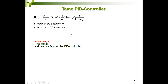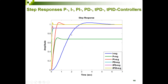Let's compare all these controllers with each other using a plot where a step input is applied to each controller type. The same process is used for all controller types. A standard I controller (PI with P factor of 1) is really slow — never use only an I controller with a proportional gain of 1. We zoom in on the P, PI, PD, tame PD, and tame PID controller responses over the first two seconds.